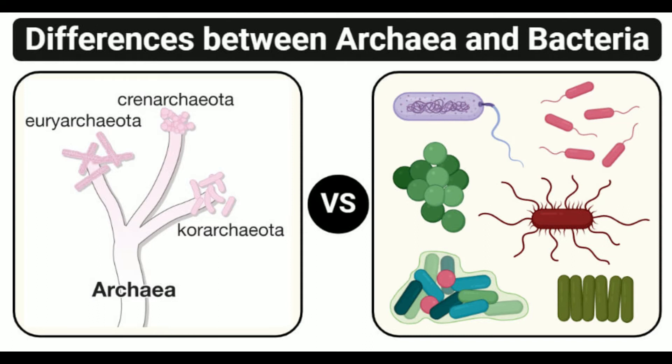Reproduction: Archaea reproduce by fission, budding, and fragmentation. Sporulation does not occur in archaea, whereas some bacteria are capable of forming spores that help them survive extreme conditions. Thymine is absent in the tRNA of archaea. tmRNA is found in bacteria. Introns are present in the chromosomes of archaea but absent in the chromosomes of bacteria.